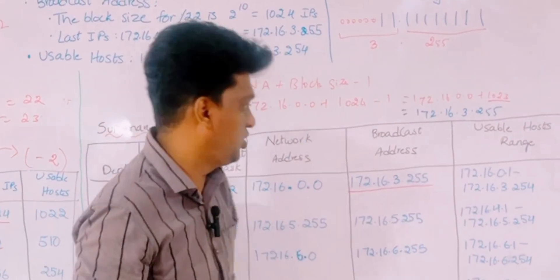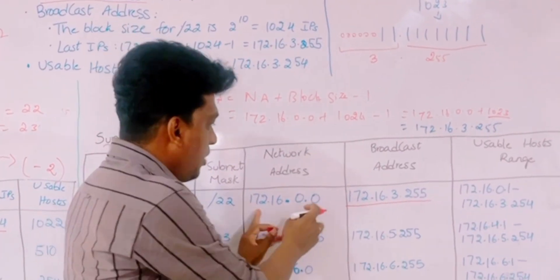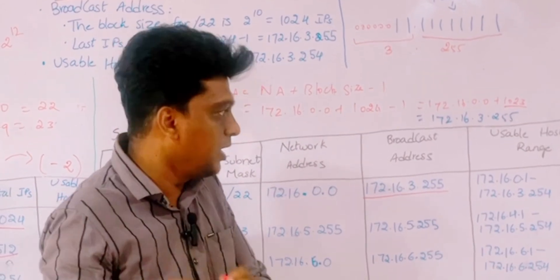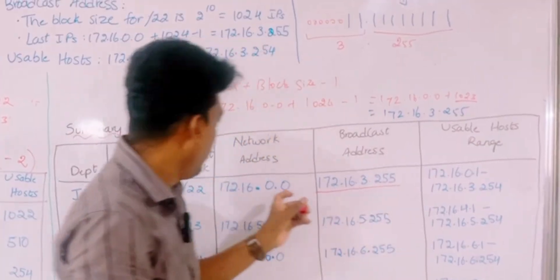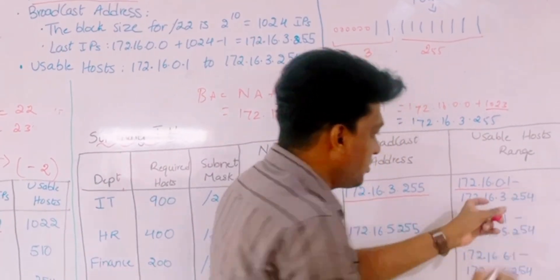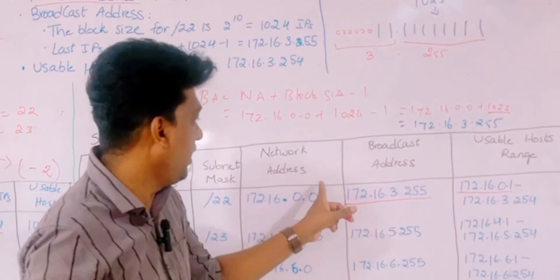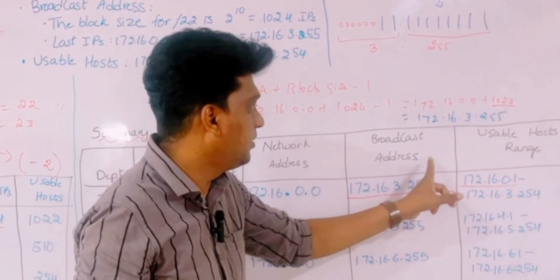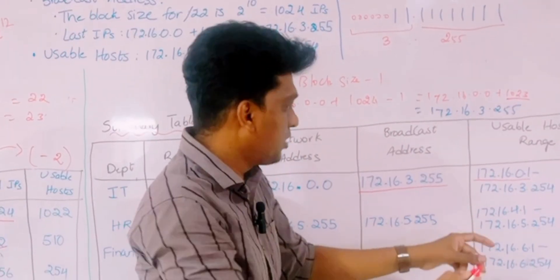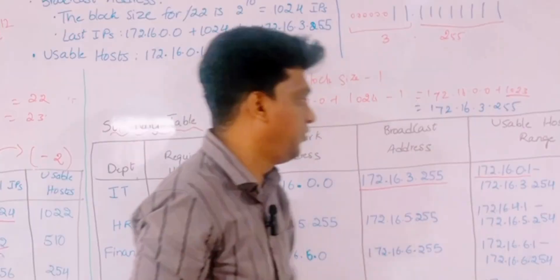To identify the usable host range, we add 1 to the network address and subtract 1 from the broadcast address. So the first usable host is 172.16.0.1 and the last usable host is 172.16.3.254, since 255 minus 1 equals 254.